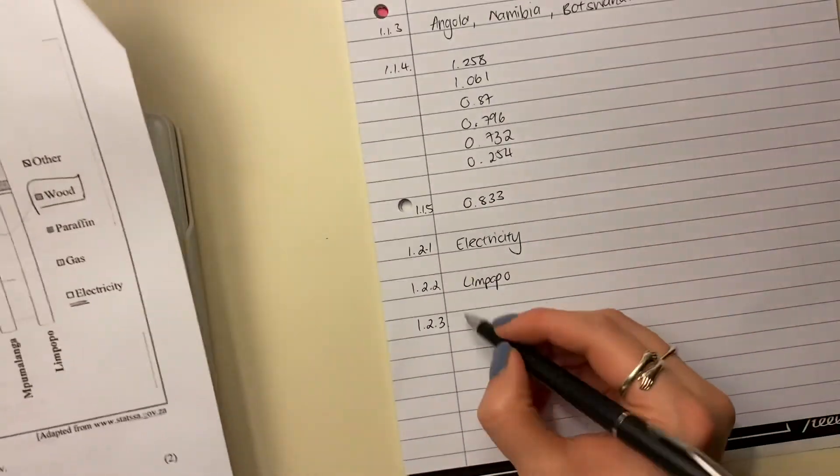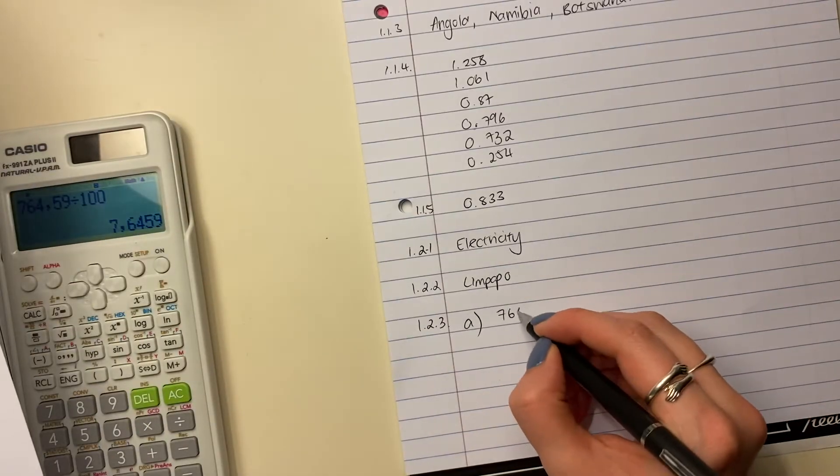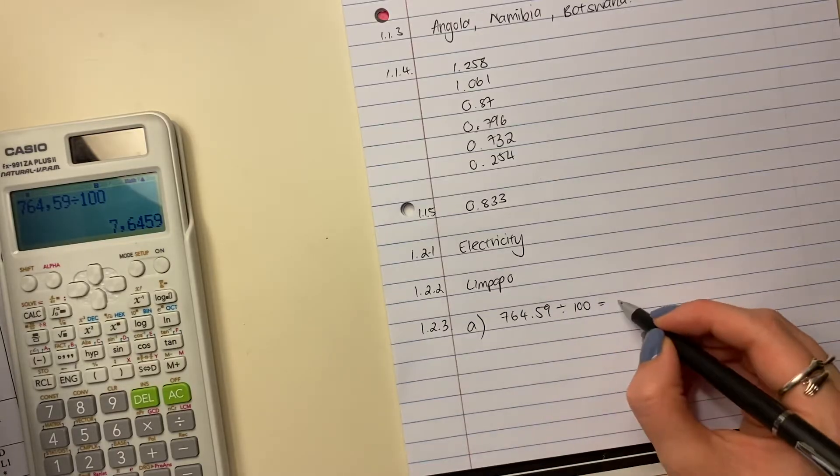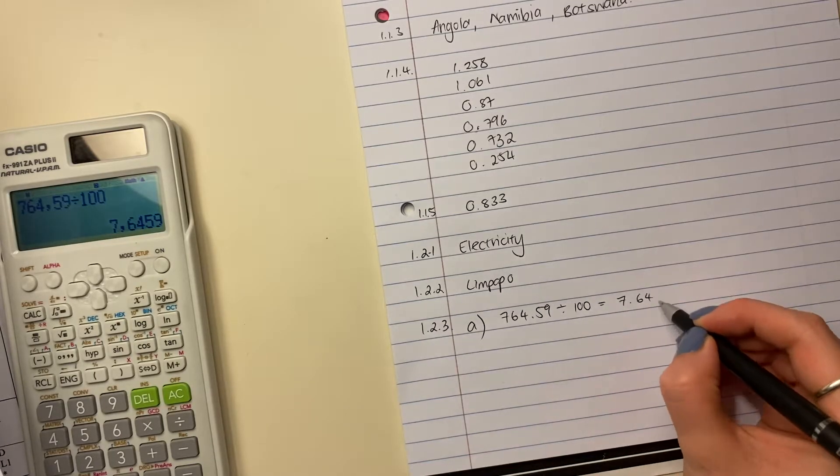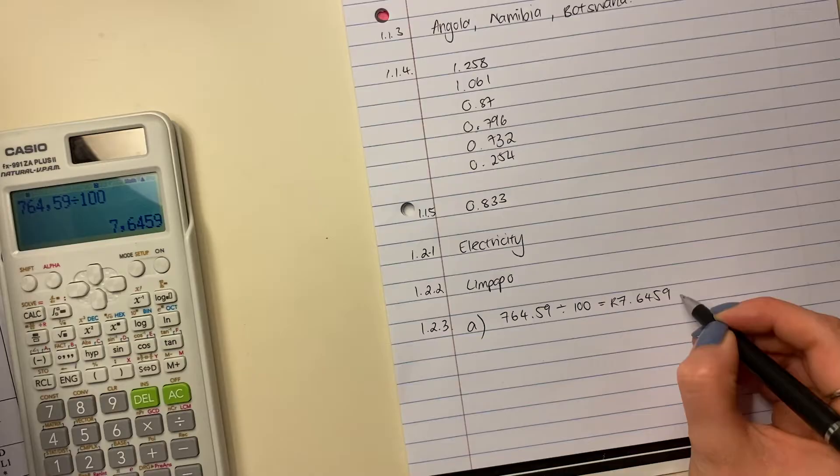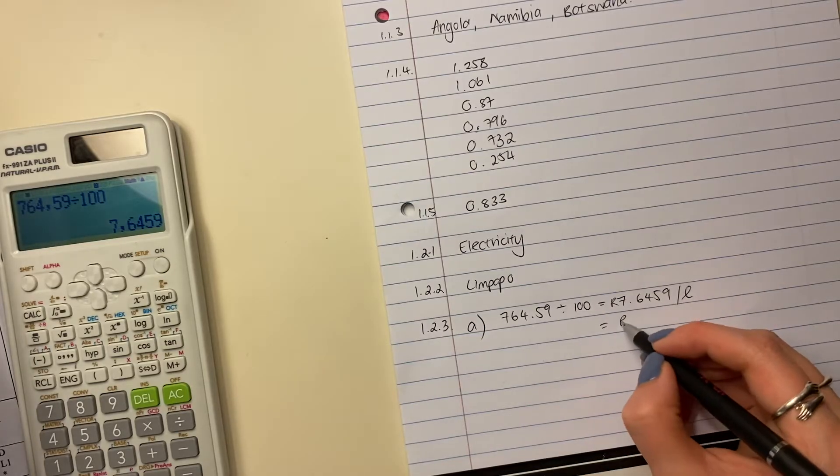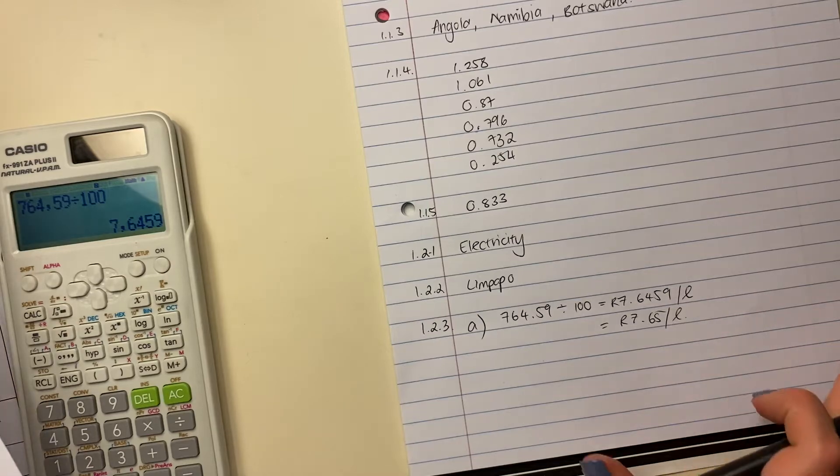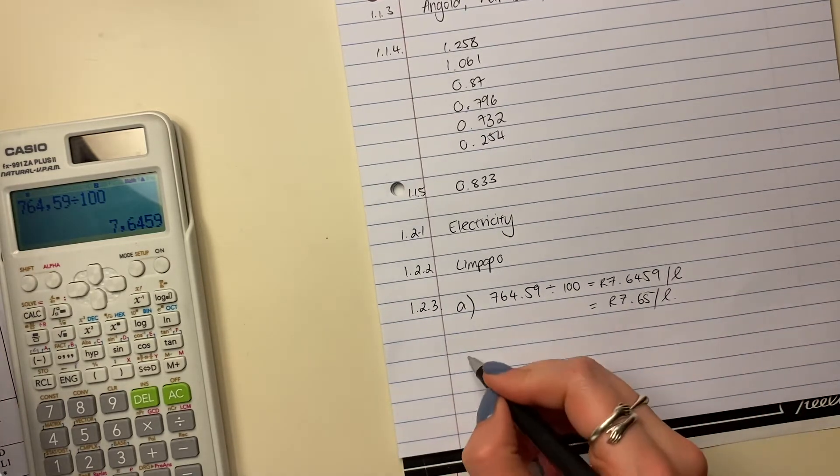So I'm going to say here, A. Just to show your working. So say 764.59 divide by 100. And it's going to be 7.6459 rand per liter. Just round it off so that we are in the correct realm. Okay, there's your answer there.